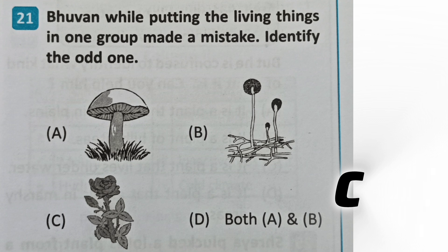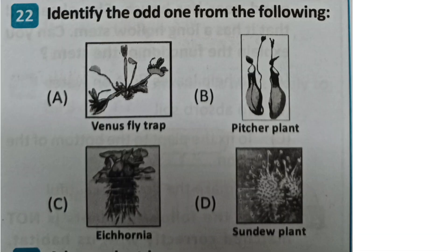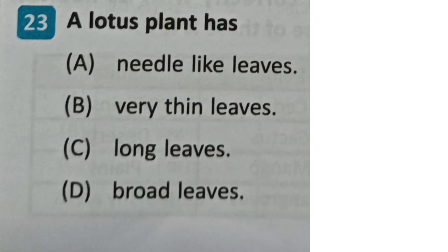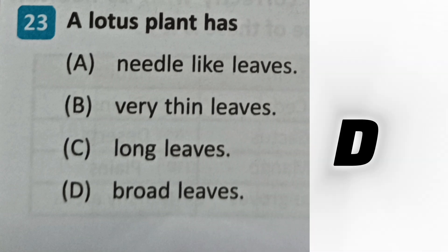Next question: Identify the odd one from the following. The correct answer is C. Next question: A lotus plant has which type of leaves? Options: needle-like leaves, very thin leaves, long leaves, broad leaves. The correct answer is D - broad leaves.